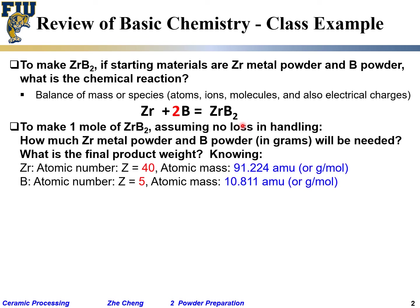Now the question: to make one mole of zirconium diboride — assuming no loss in handling — how much zirconium metal powder and boron powder in grams will be needed? And what is the final product weight? This is middle school chemistry, but it's what you need in materials science and engineering.